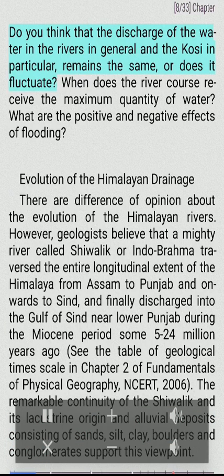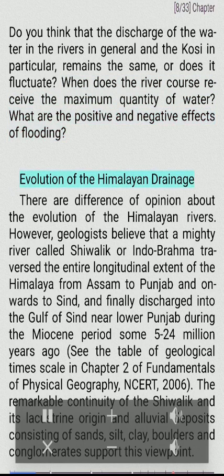Do you think that the discharge of water in the rivers in general, and the Kosi in particular, remains the same or does it fluctuate? When does the river course receive the maximum quantity of water? What are the positive and negative effects of flooding?